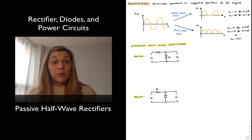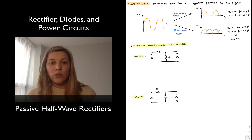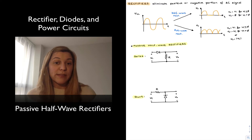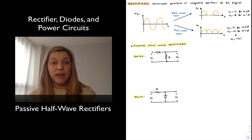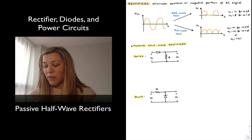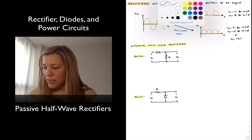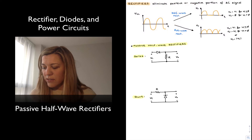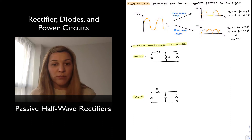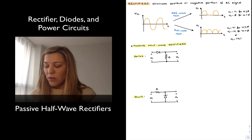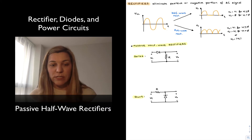There are different implementations for rectifier circuits. We are going to start with the two most basic and simple ones, which are the passive half-wave rectifiers, and we're going to start with the series version of that circuit. A series passive half-wave rectifier consists of a diode in series with a resistor, where the output is taken across the resistor.